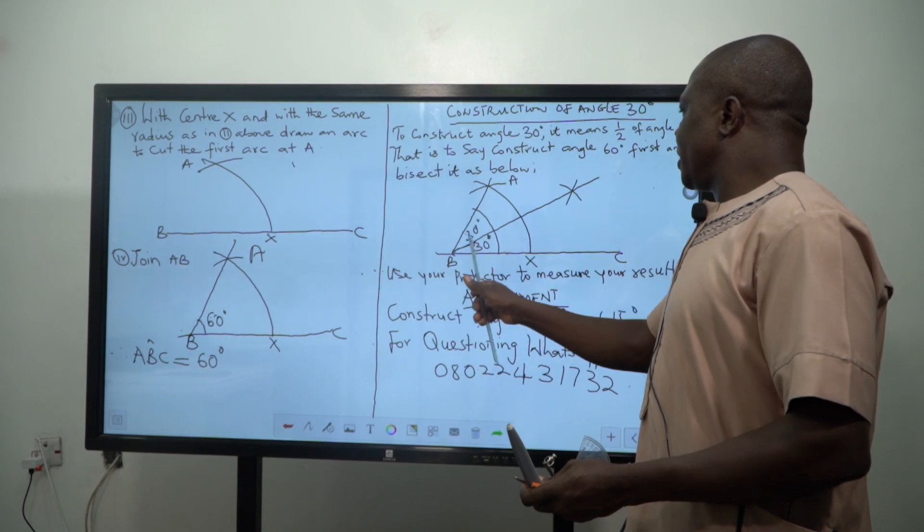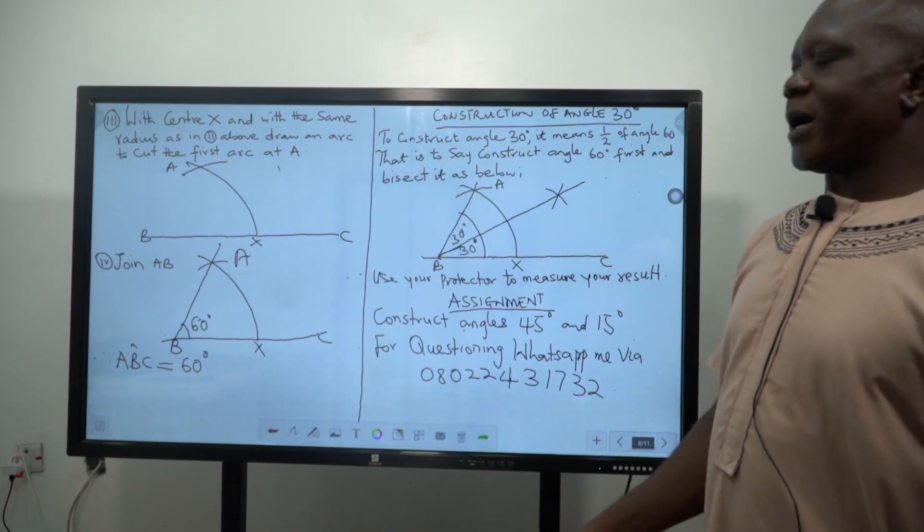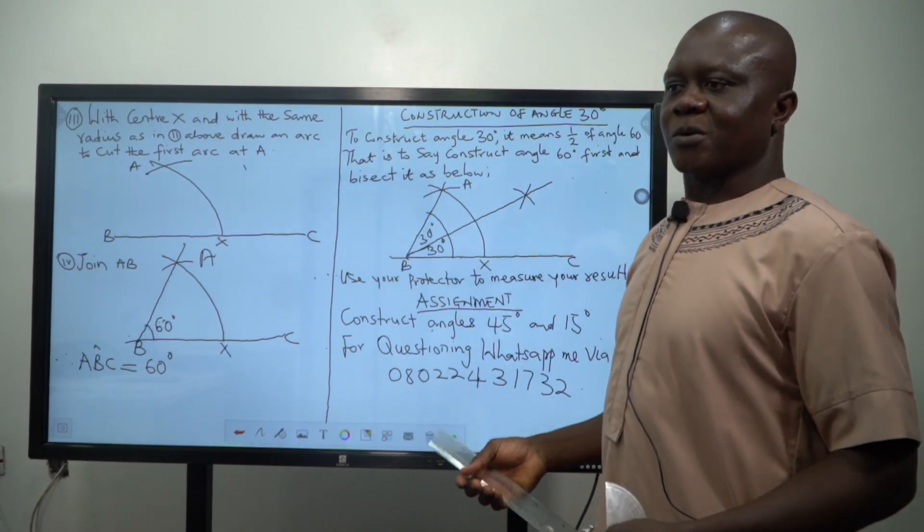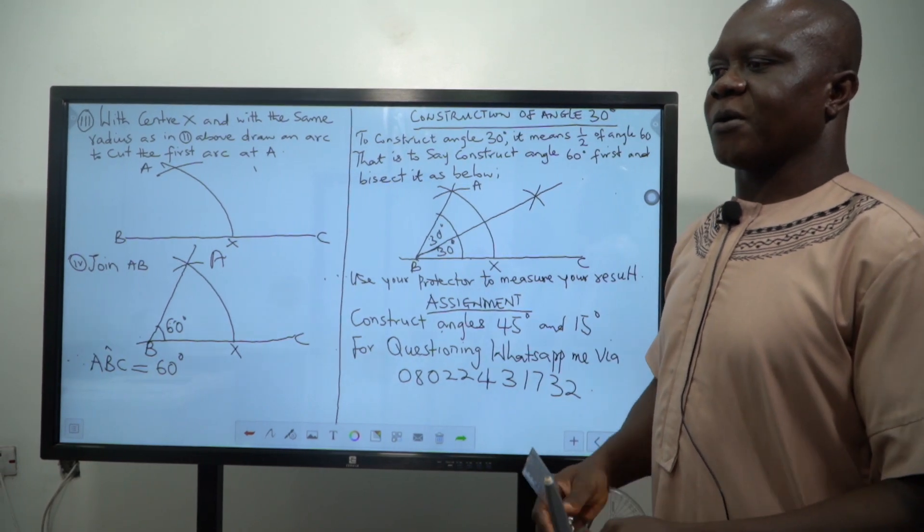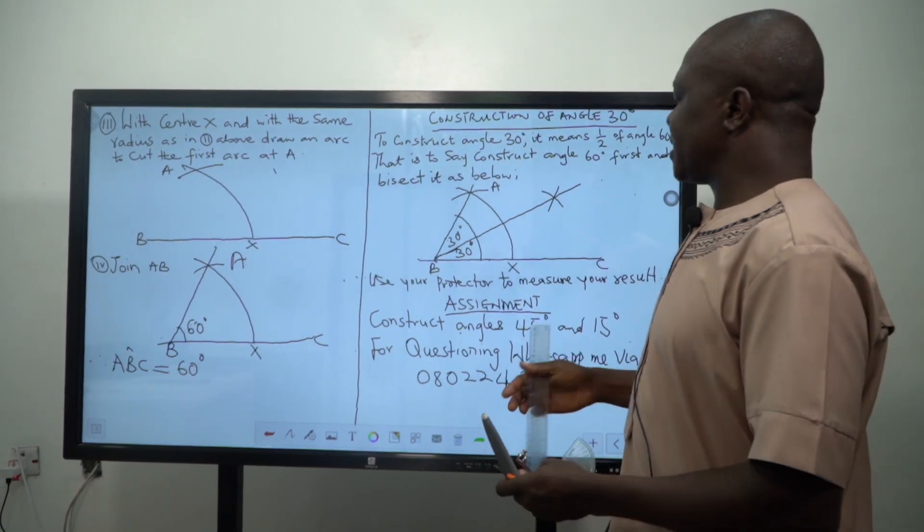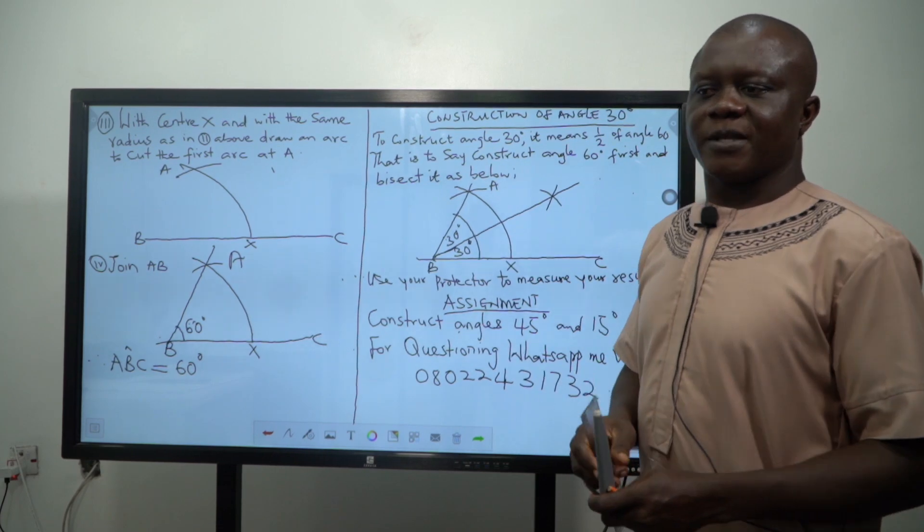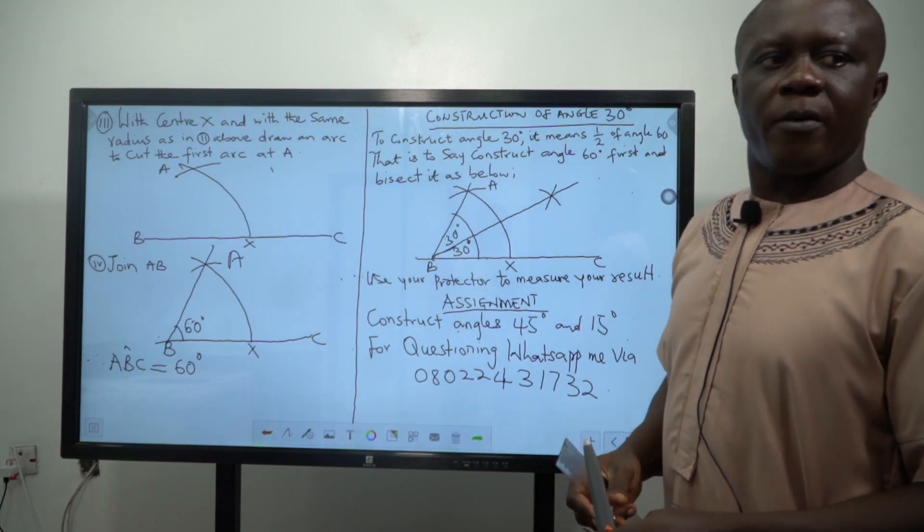So with this now, one can as well construct other angles. Like if you want to construct angle 15, what it means is that you are going to divide angle 30 into two equal parts.